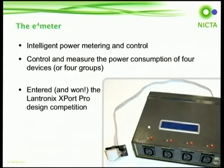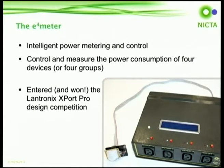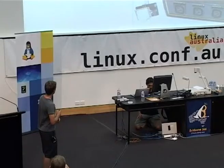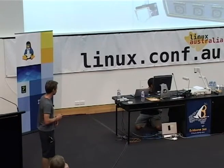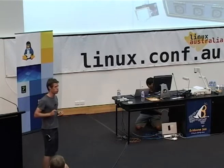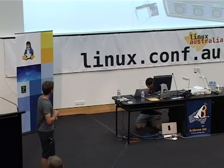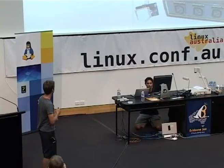So we ended up with this power meter - this is the prototype - with four individual outlets on the front so you can measure four devices at once. There's a little LCD to show people immediate feedback about the power that certain things are consuming. There's also this little device which is a sensor array - I'll go into a bit more detail about that in a second. So you can measure and control four devices, either with the hardware switches on the front or using the web interface which we'll talk more about later.